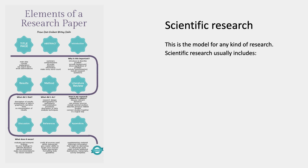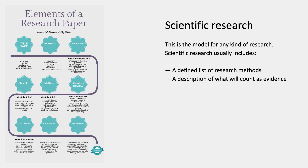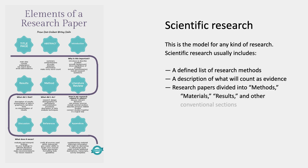Here are some of the elements that usually go into scientific research. First of all, there's usually a defined list of research methods. There's usually also a description of what will count as evidence — what's being studied. And then when it comes to writing up the research, papers are divided into conventional sections with headers like methods, materials, results, and other conventional sections. So there's a kind of uniformity to scientific research that depends on elements like these.